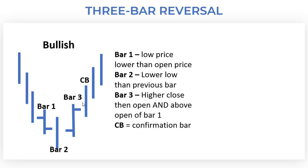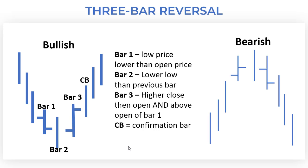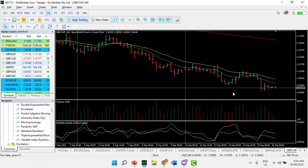Then we get our confirmation bar. We can also see the reverse is the case for the bearish three bar reversal — we get the same pattern as a mirror image, and then that confirmation bar. Let's look at an example: the GBP/CHF on the four hour chart.